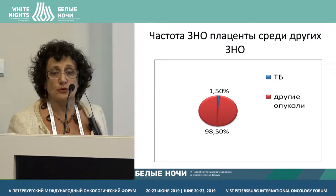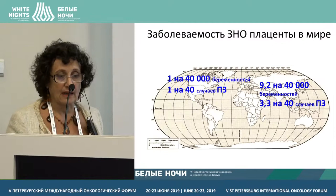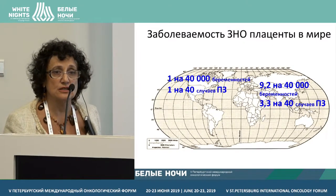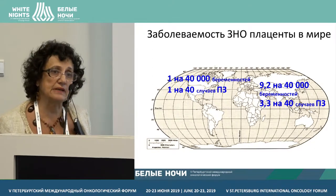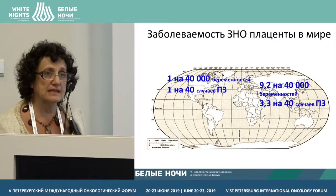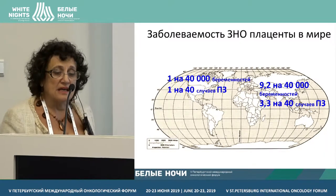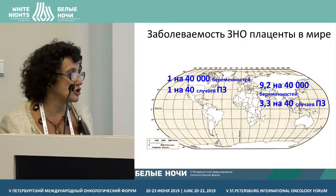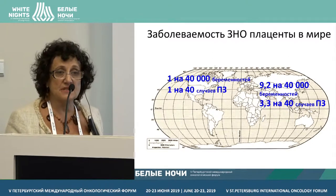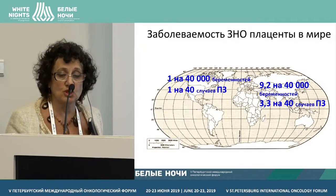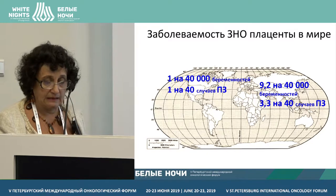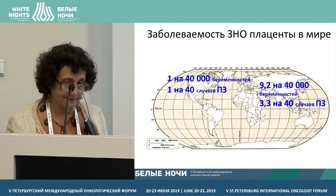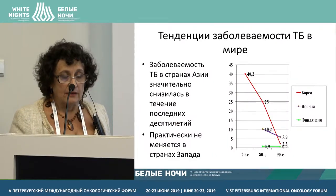In the structure of other tumors, trophoblastic disease is not higher than 1.5%. Looking at a world map, there is probably one case per 40,000 in the Western world — one per 40 cases of molar pregnancy — and nine cases per 40,000 in Eastern countries, with 3.3 per 40 cases of molar pregnancy.